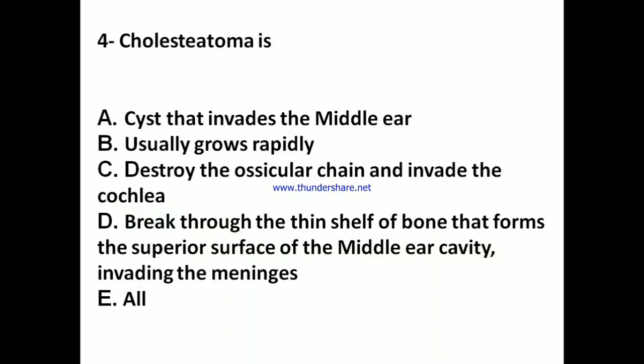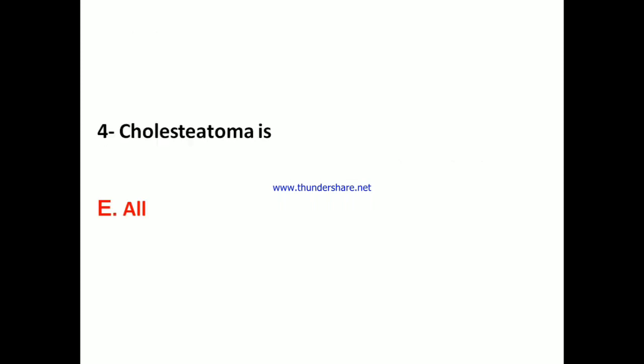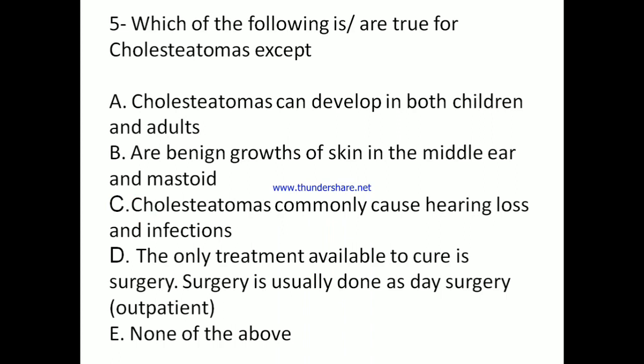Question 4: Cholesteatoma is a cyst that invades the middle ear. B) Usually grows rapidly. C) Destroys the ossicular chain and invades the cochlea. D) Breaks through the thin shelf of bone that forms the superior surface of the middle ear cavity, invading the meninges. Answer: All of the above.